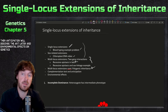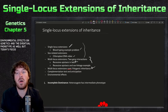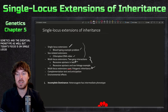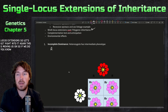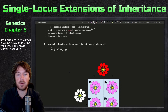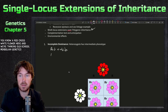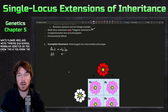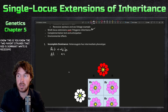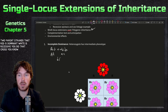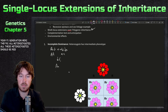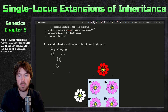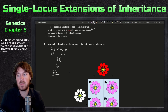Today's focus is on single locus extensions. Moving on from old-school Mendelian genetics: if we do a red cross white flower cross, red is dominant and white is recessive. You get your F1 generation — they're all heterozygotes, and all those heterozygotes should be red because that's the dominant one. However, there's a case where they're not red.